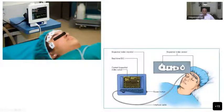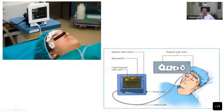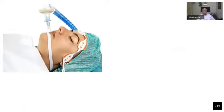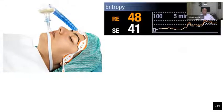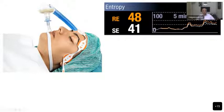You also get a real-time EEG tracing displayed on the BIS monitor, showing the variations that are happening. There is a power button, an interface cable, and these are the various parts of the bispectral index monitoring system. This is the entropy monitor, where the sensor placement is almost the same — one, two, three electrodes are placed on the forehead.